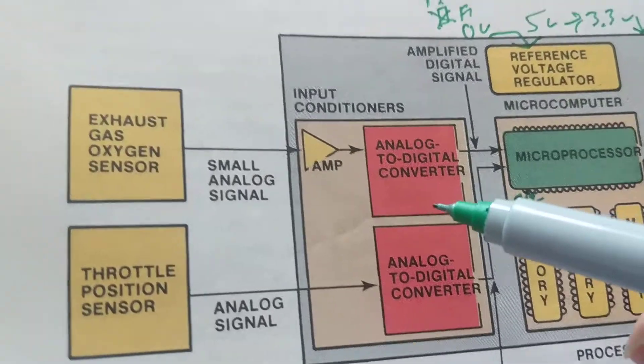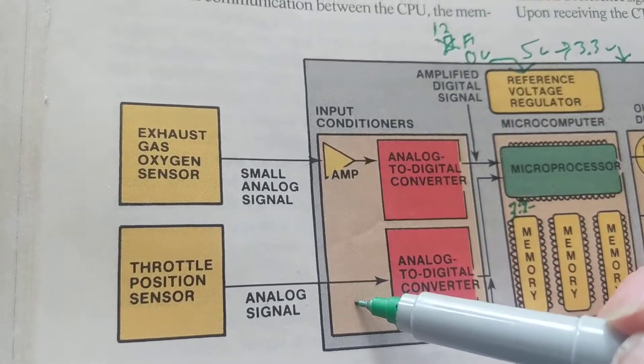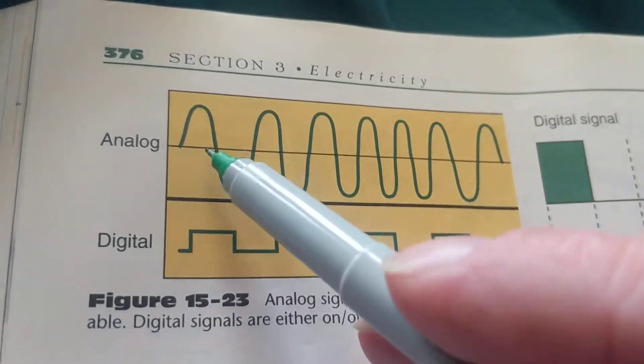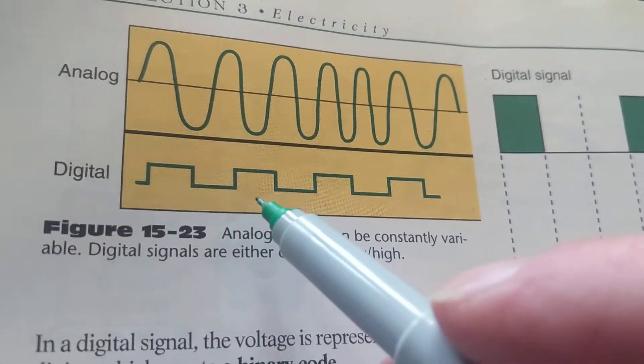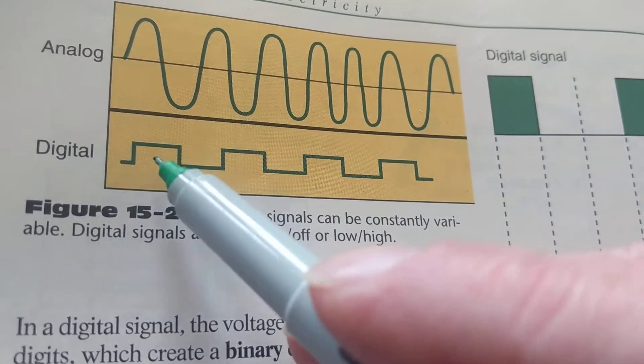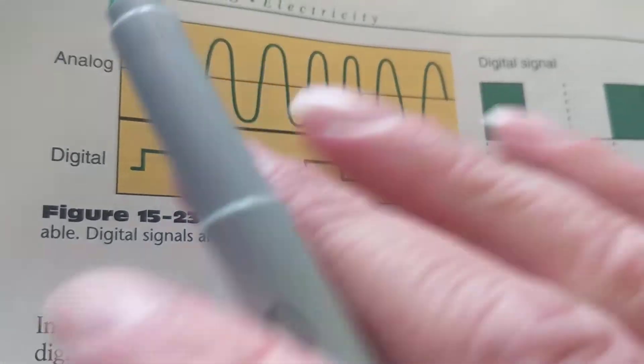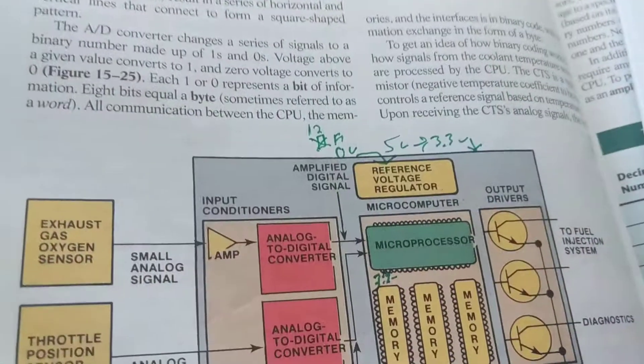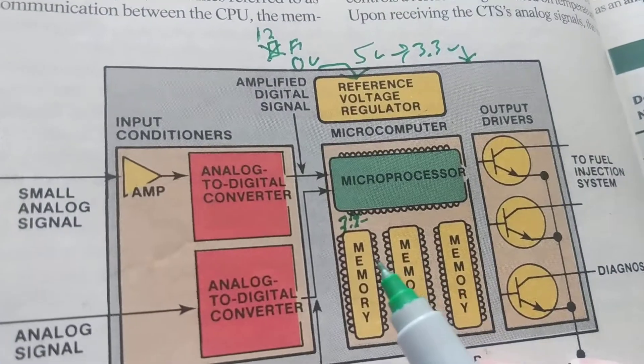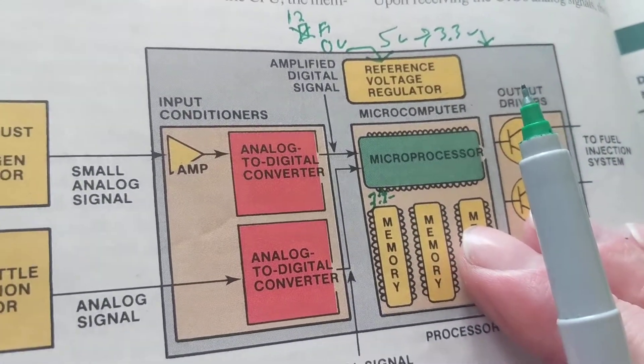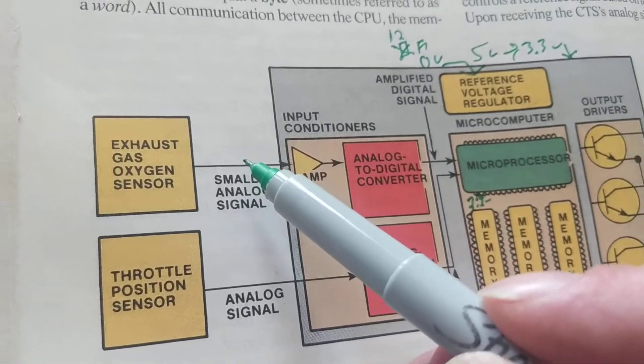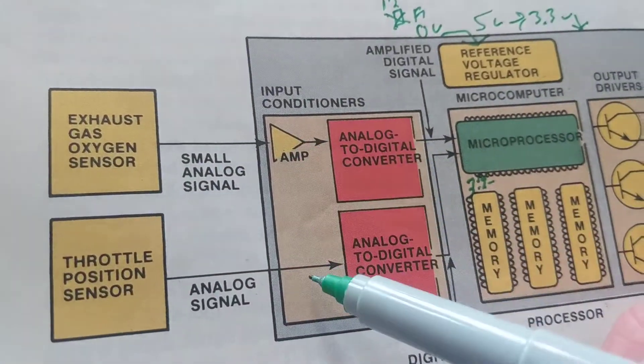Analog means like a sine wave—1 volt, 2 volts, 3 volts. It's converted to digital, 1 or 0. That's what digital is. The main point is this gets a digital signal. Oxygen sensors, these sensors are inputs.